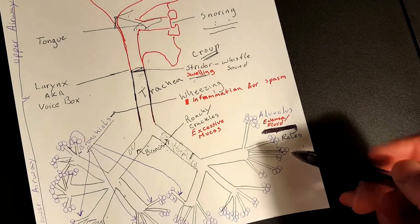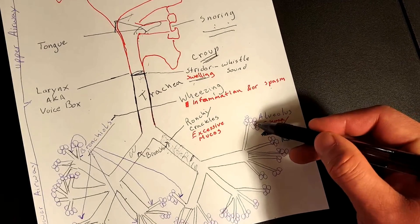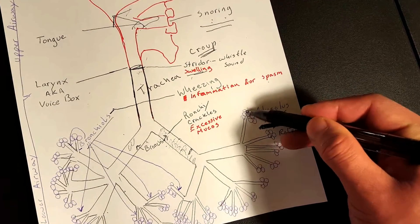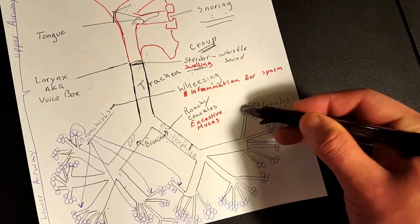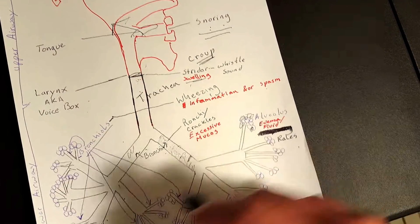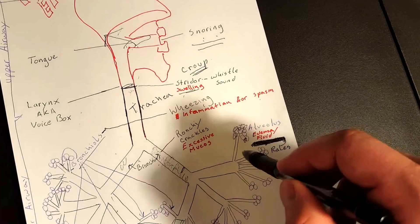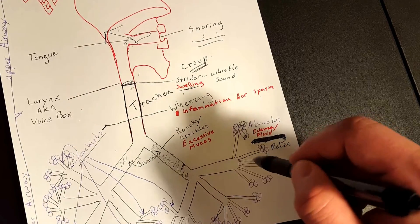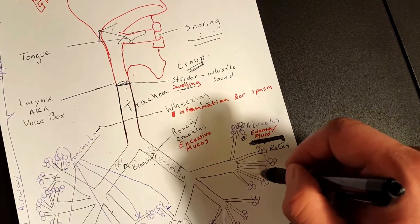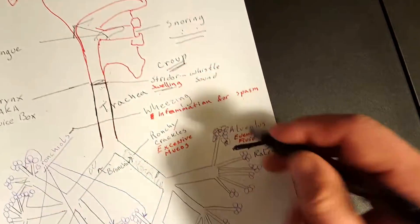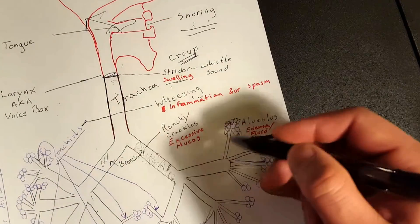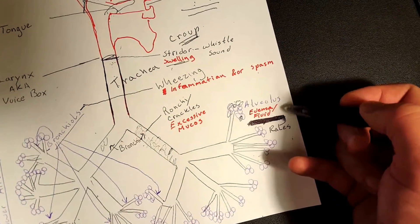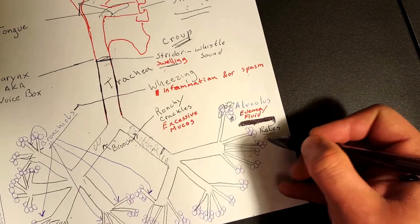Okay, and then finally you have your alveoli, the very last part of your entire airway. This is where all the action happens - that gas exchange. Blood gets to this part from the right side of your heart, and then it delivers it with O2 to the left side of your heart. But that doesn't involve this, so let's go ahead and skip that. Anyways, in your alveoli you're going to have what's called rails.